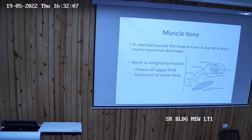What is the receptor in the muscle fiber? What is the receptor called in the muscle? That is the muscle spindle. Muscle spindle has intrafusal fibers and extrafusal fibers.